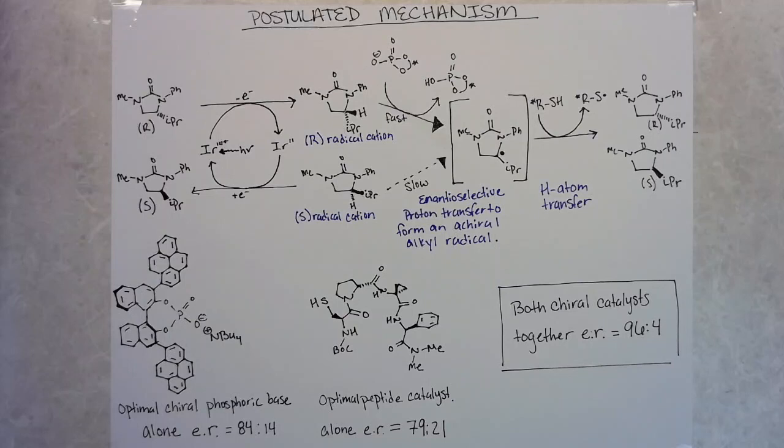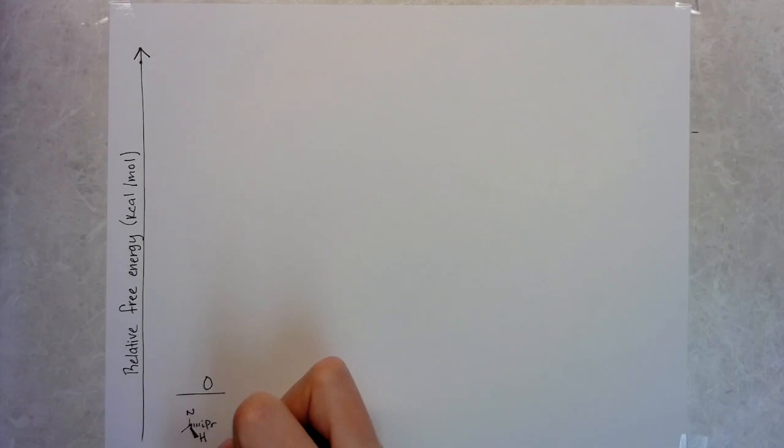Scott Miller is also a corresponding author on this paper and his group is specialized in these polypeptide cysteine reagents — that's where his group was able to come in and help the Knowles group overcome the barrier to get to these highly enantioselective reactions, really showing the value of the collaborative work between these two groups.